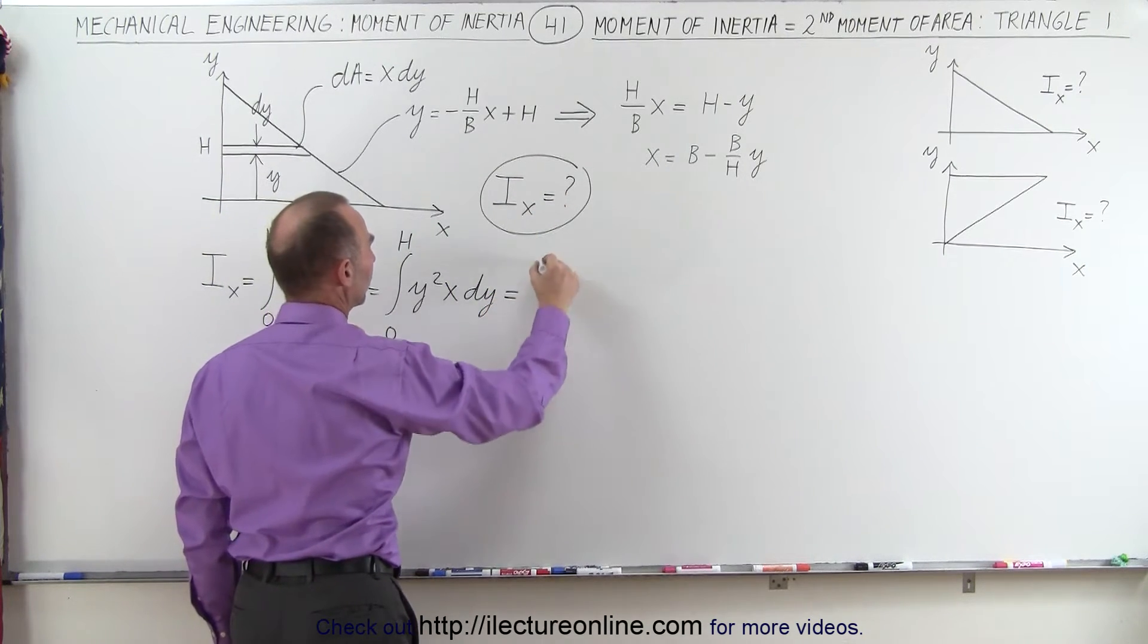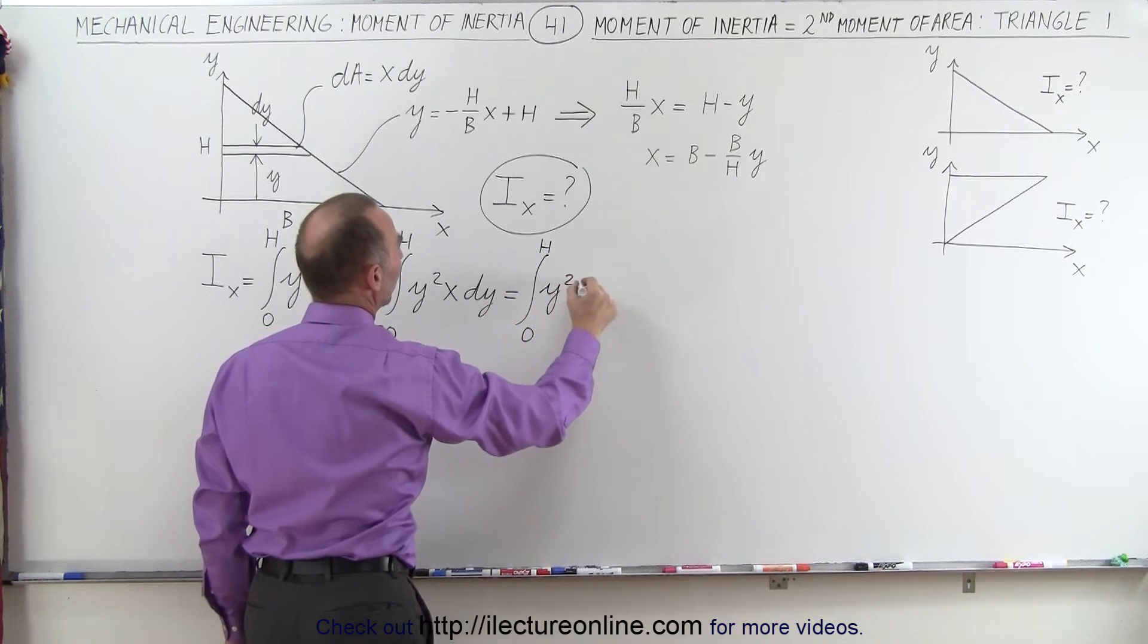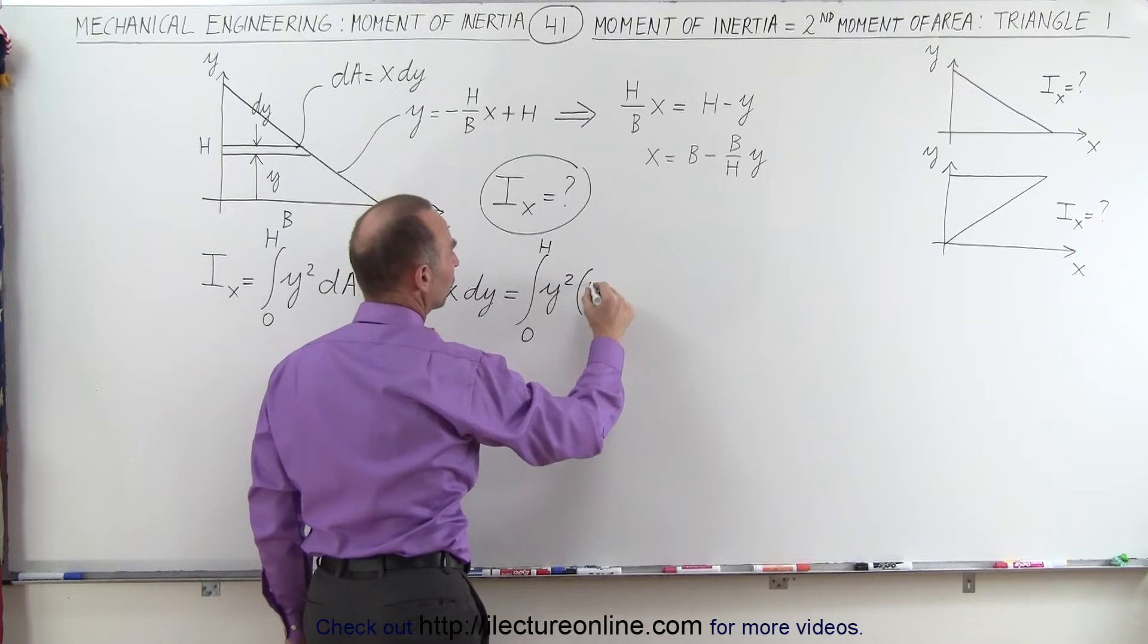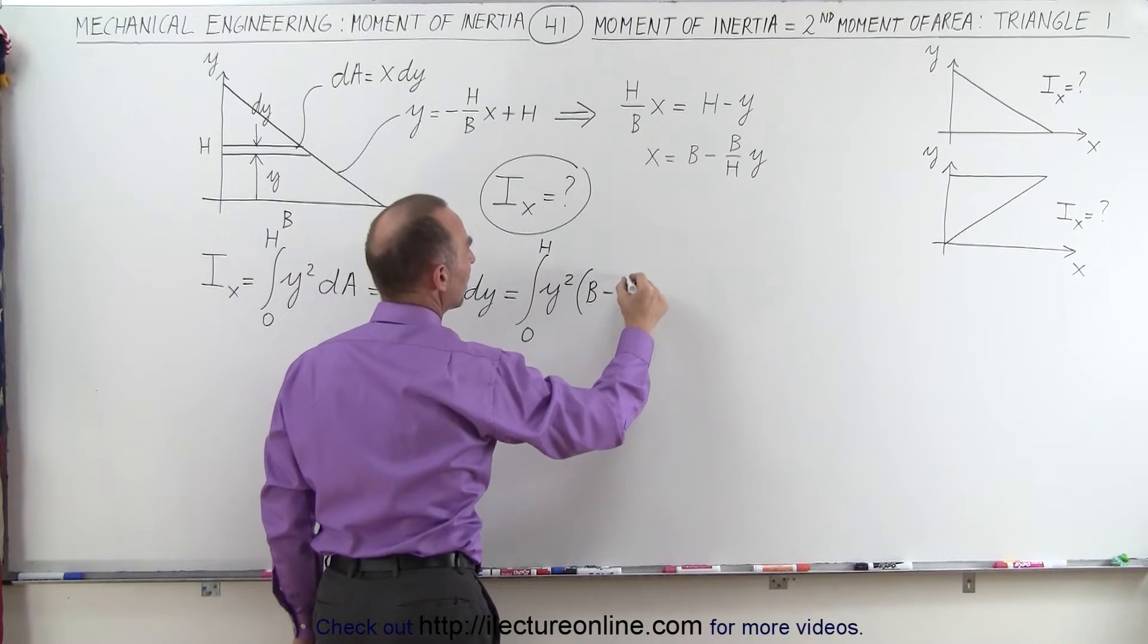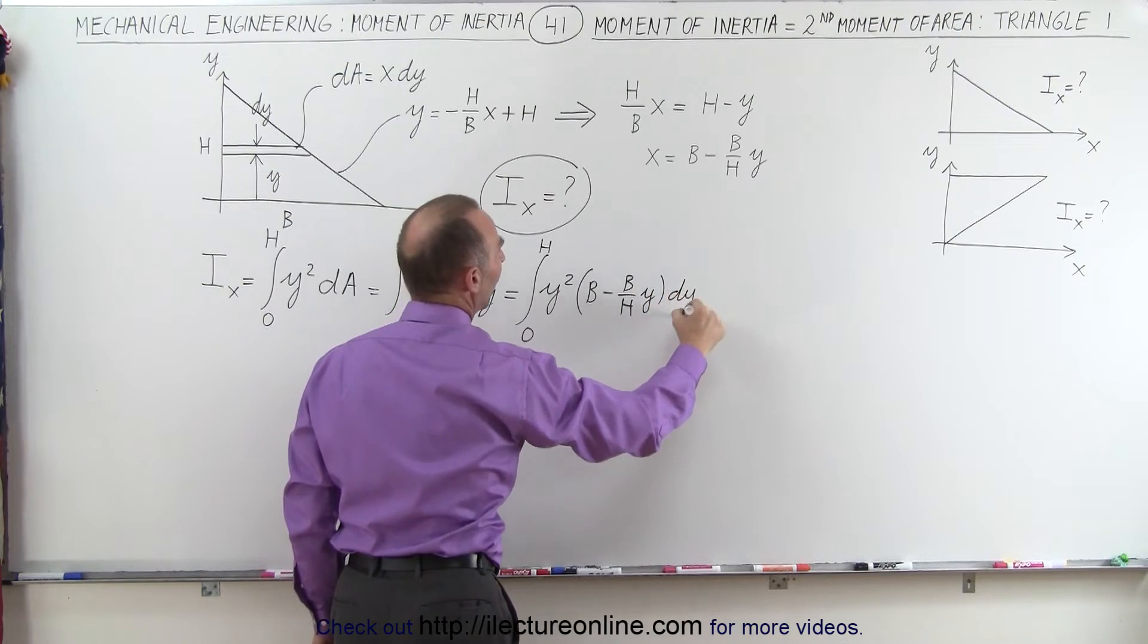So this is equal to the integral from 0 to h of y squared times what x is equal to in terms of y, which is b minus b over h times y times dy.